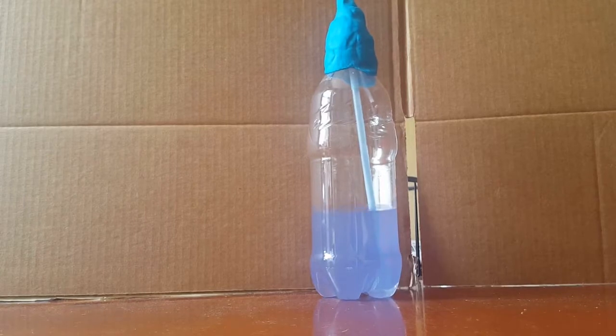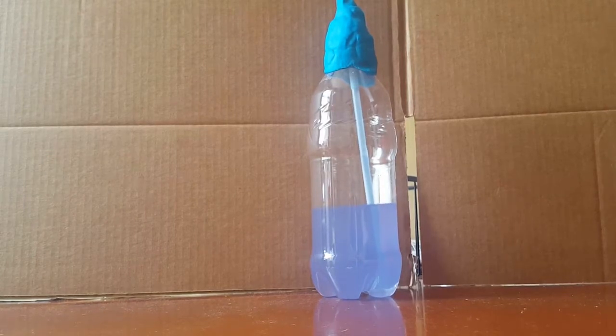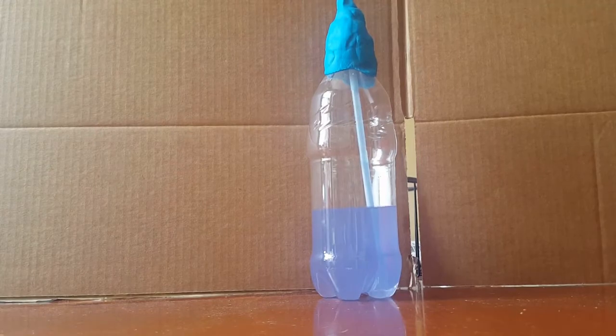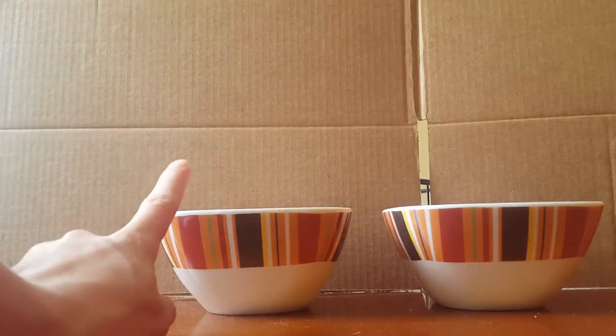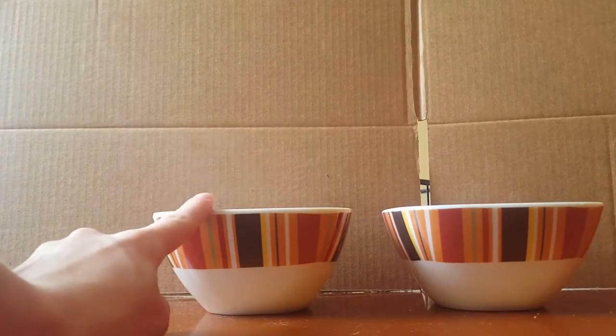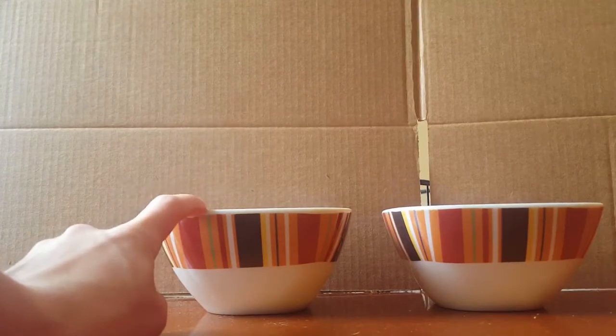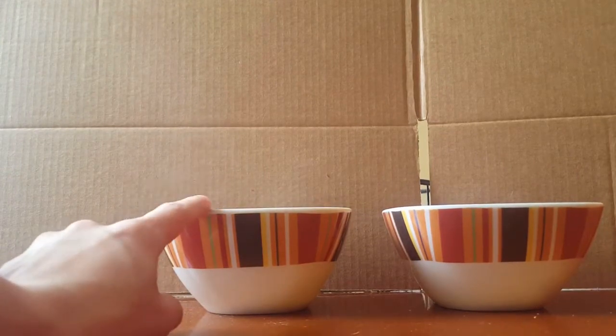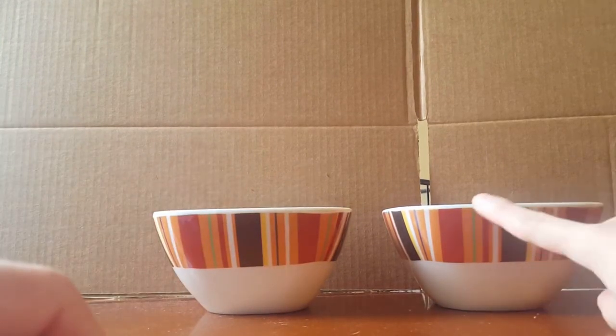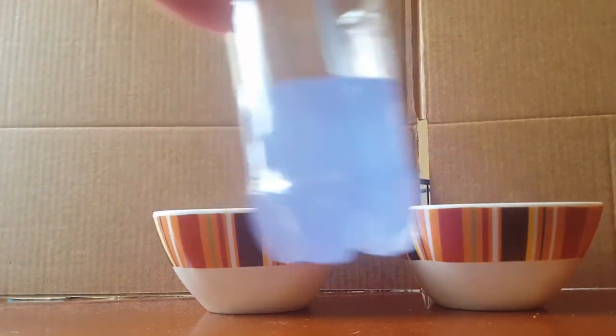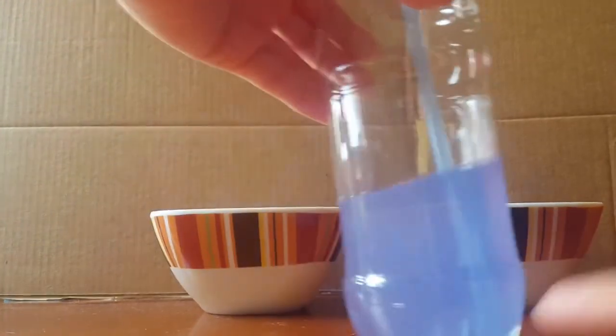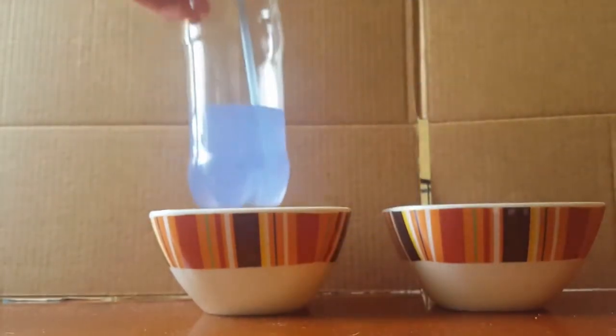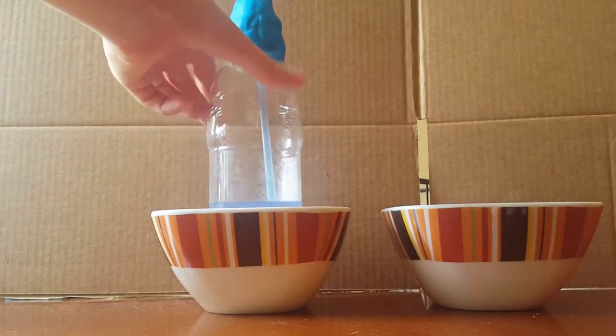So let's get a bowl of cold water and a bowl of hot water and test out our thermometer. I have here a bowl of steaming hot water. Get help with an adult with this as it can burn and a bowl of ice water. So let's put our thermometer in the water and see if the liquid moves up the straw. So put in the hot water.